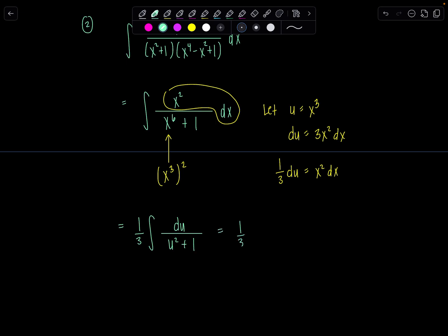Easy breezy from here on out. So this is going to be one third tan inverse of u plus, that's right, c2. And then who was u? Our good friend, right up here, x cubed plus c2. And we're done.